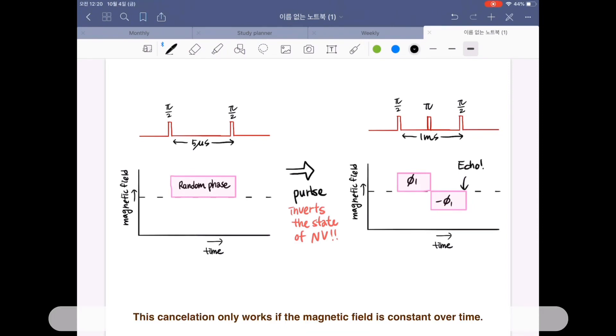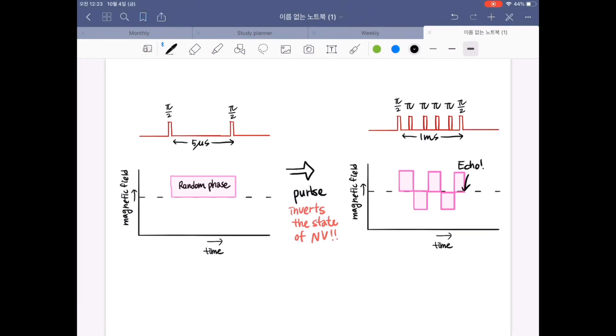This cancellation only works if the magnetic field is constant over time. As long as the field fluctuates slowly, we can just flip the electron spin multiple times faster and faster than everything still averages out.